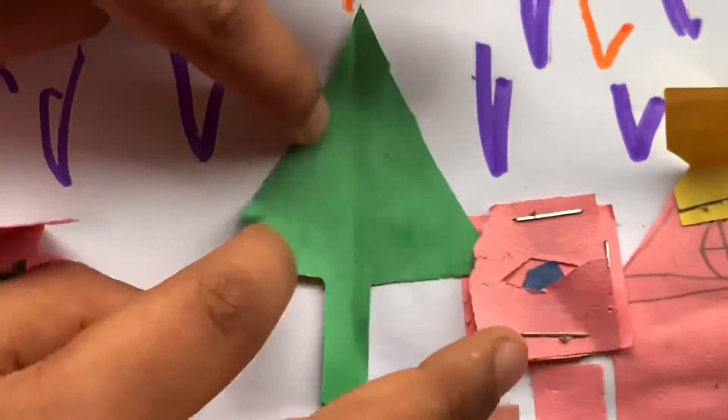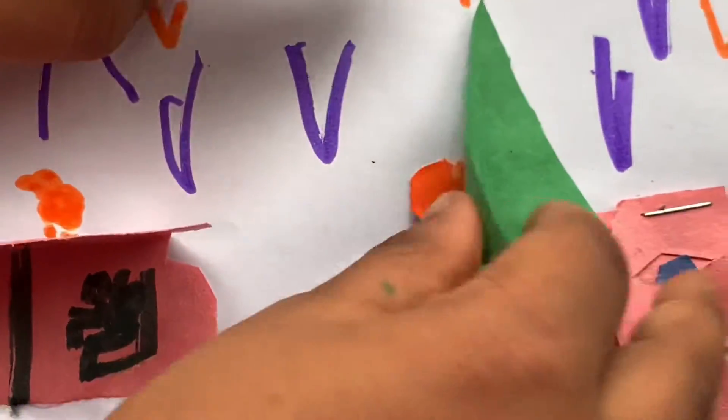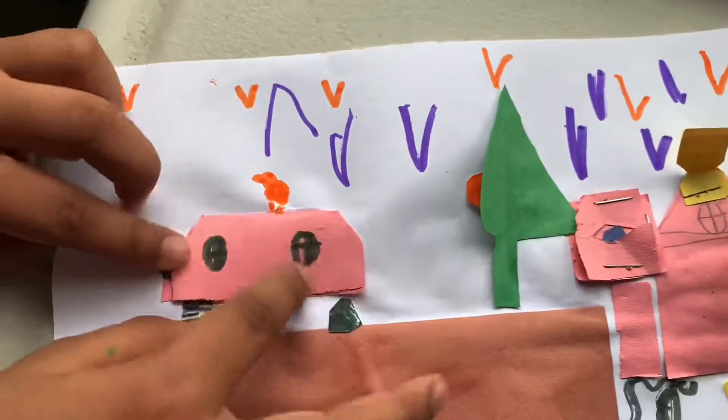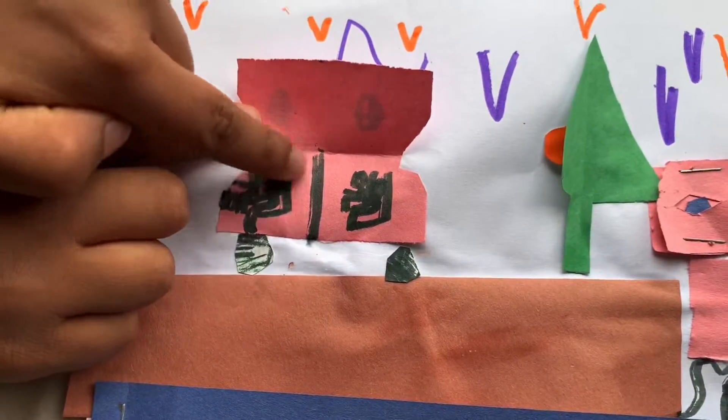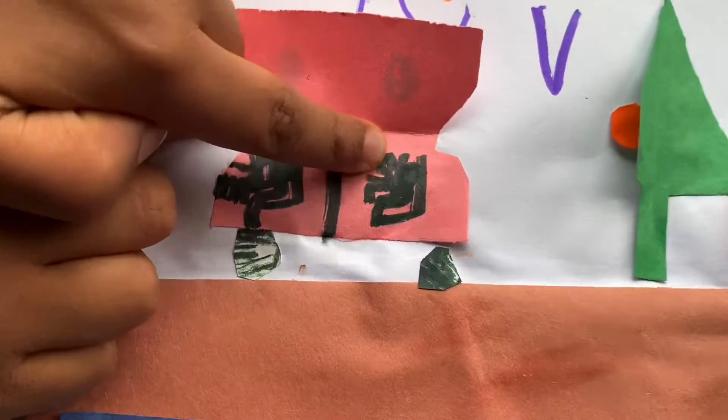This is a tree with an apple if you open it. This is my car. This is my mom, my dad, my sister, and me.